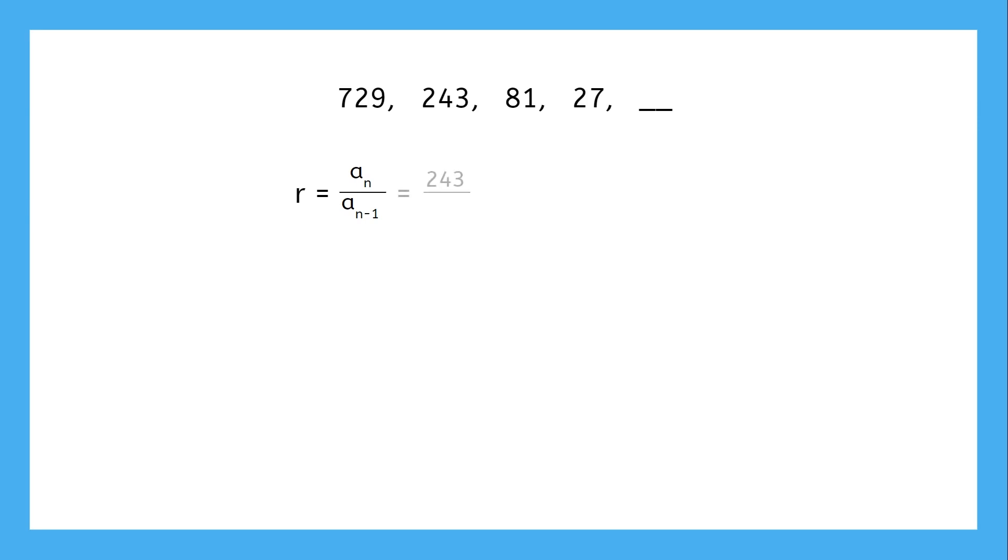So in this case, we take the second term and divide it by the previous term. When we reduce this fraction, we get 1/3. So the ratio between 729 and 243 is 1/3. We'll get the same thing between the other terms: 81 divided by 243 is 1/3, and 27 divided by 81 is 1/3 as well.